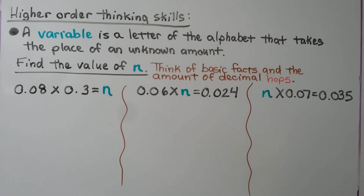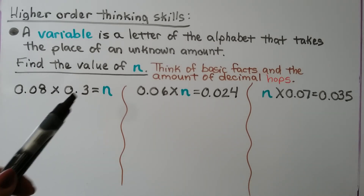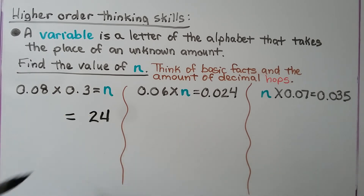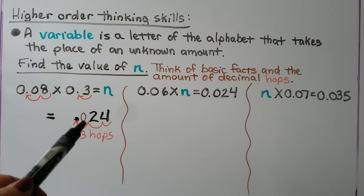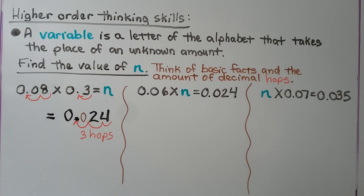Let's try some higher order thinking skills. A variable is a letter of the alphabet that takes the place of an unknown amount. We need to find the value of n. We think of basic multiplication facts and the amount of decimal hops that are in the factors that should be in the product. We have 8 hundredths times 3 tenths. We think 8 times 3 is 24. We count how many decimal hops there are in the factors — there are 3 decimal place value hops — so there are going to be 3 in the product. We put a 0 as a placeholder in the tenths place. We have 24 thousandths.